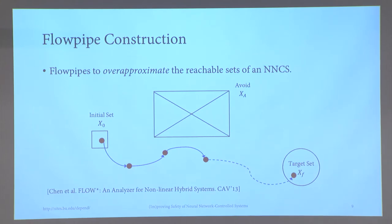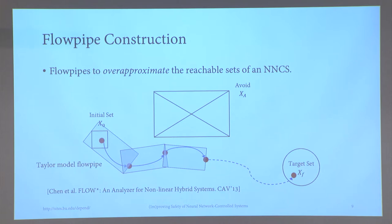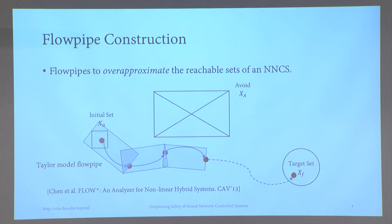All three approaches rely on flow pipe constructions — an approximation of the reachable set, specifically Taylor model flow pipes, where the reachable set is represented by a finite set of Taylor models. The flow pipes over-approximate the trajectories the system can generate. You check whether this over-approximation ever intersects the avoid set, and at target time t, whether the reachable set is contained in the target set — a positive containment gives a positive answer to the reachability problem.